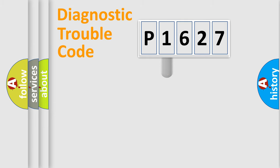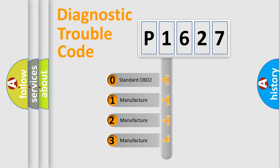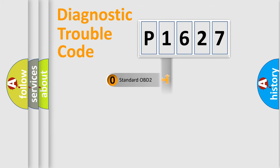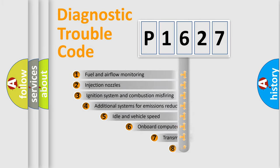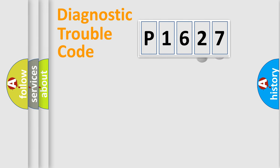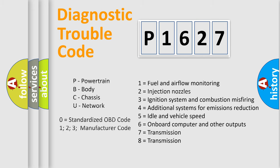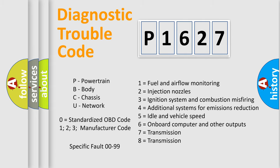This distribution is defined in the first character of the code. If the second character is expressed as zero, it is a standardized error. In the case of numbers 1, 2, or 3, it is a more specific car-specific error expression. The third character specifies a subset of errors. The last two characters define the specific fault of the group. This division is valid only when the second character is expressed by the number zero.